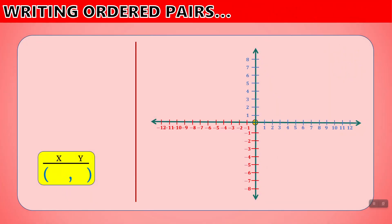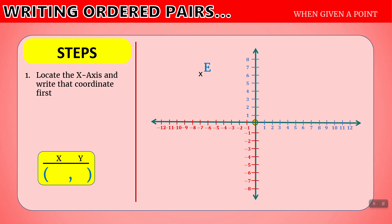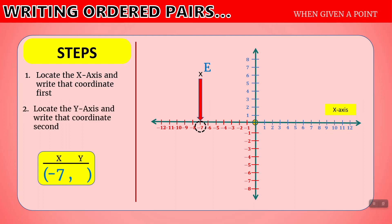So let's look at the rule. When we want to write an ordered pair, here are the steps. When we are given a point on a graph and we want to know where it's located: step one, locate the x-axis and write that coordinate first. So if we look at point E, looking at the x-axis, here is minus seven — that is our x value. Step two, locate the y-axis and write that coordinate second. If I go across, there is the six — that's a positive six, so my y value is six. So E is located at the point minus seven comma six.